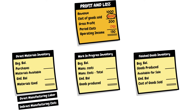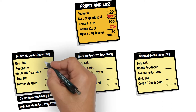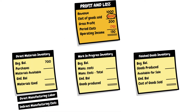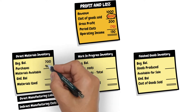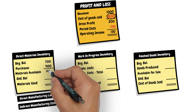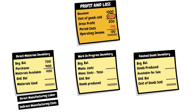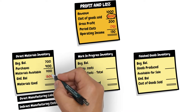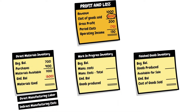The beginning balance for the direct materials inventory not used in production is 700, and the company purchased additional direct materials during the current year with a cost of 400, to get the direct materials available for use in production. At year-end, the direct materials not used in production is 600, which means that the cost of the direct materials issued to production during the year is 500.